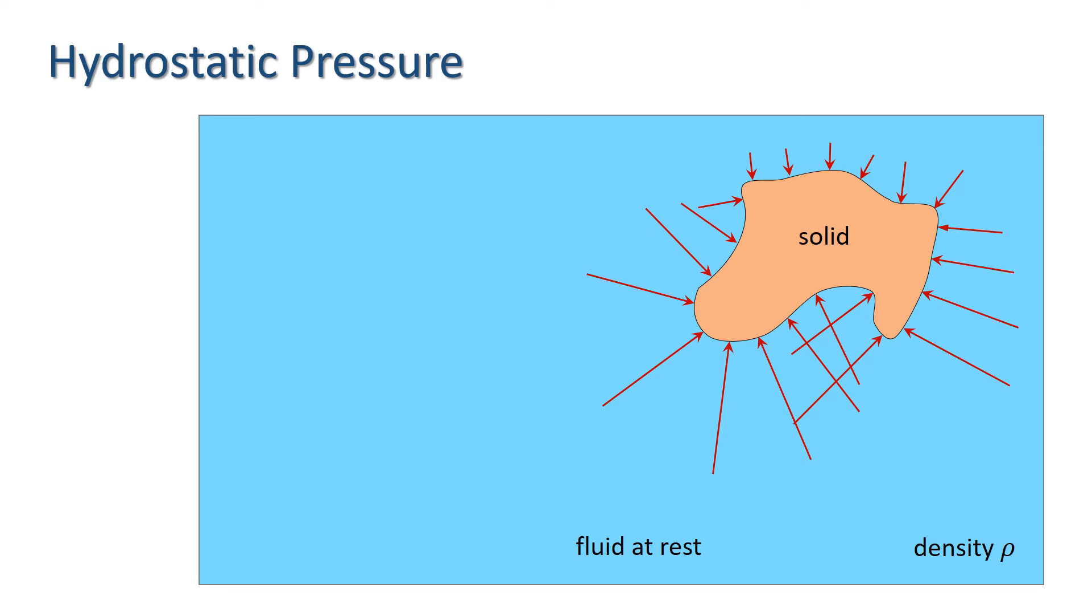Second, that we have a hydrostatic pressure distribution, meaning that pressure increases linearly with depth with gradient rho times g, where rho is the density of the fluid and g is acceleration due to gravity.